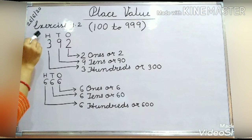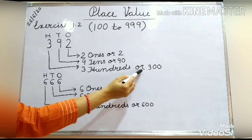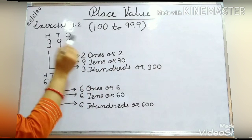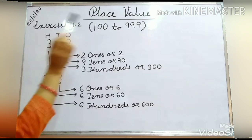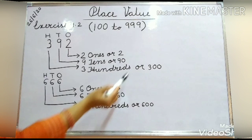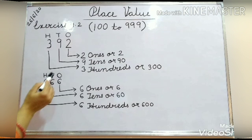And 3 is at 100's place. Then its value will be 3 hundreds. In digit, you write 3 and put 2 zeros for hundreds — that is 300. Now you can see that according to their place, the values are different. At 1's place, a single digit is there. At 10's place, 2 digits are there. And at 100's place, 3 digits are there. Values are increasing according to their place.